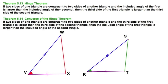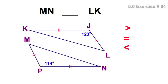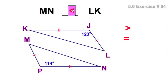Or, as we said way back in side-angle-side, the included angle. Let's start with an easy one here. I've got these two included angles between the two pairs of congruent sides. It's a bigger angle, so this must be the bigger side. There you go. Done.